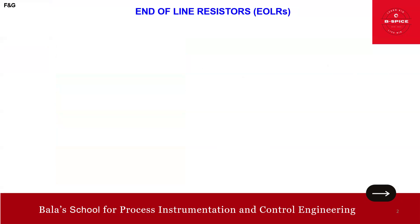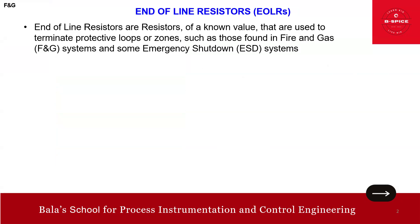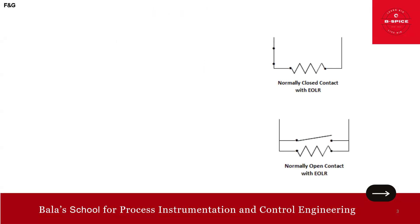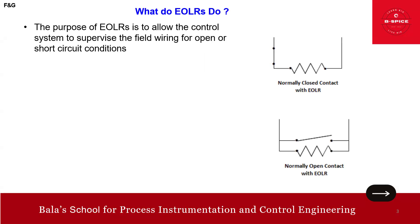So, what are end-of-line resistors? End-of-line resistors are resistors of a known value that are used to terminate protective loops or zones, such as those found in fire and gas systems and some emergency shutdown systems. That's the definition — just a refresher for those who already know this.